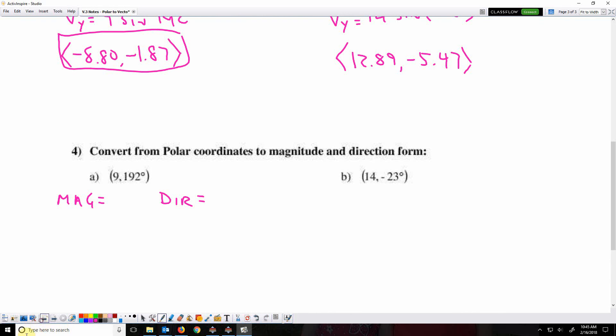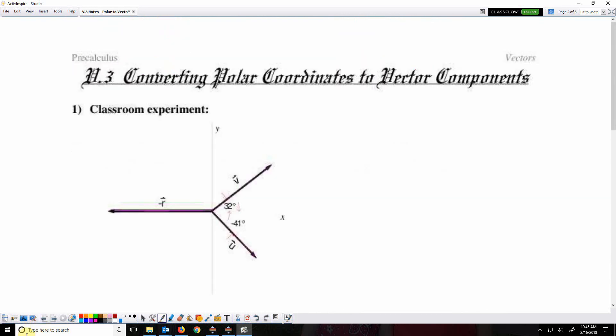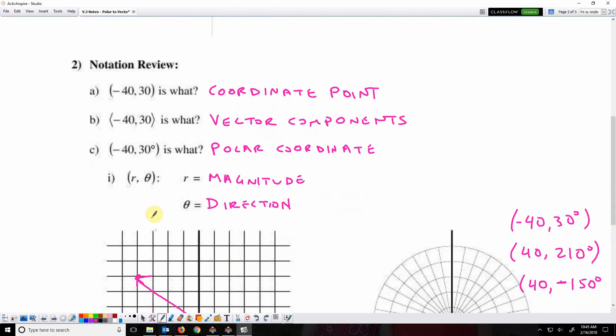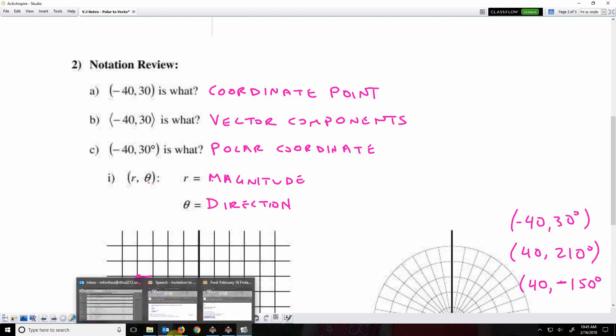Polar coordinate form is in the form r theta, which is magnitude and direction.